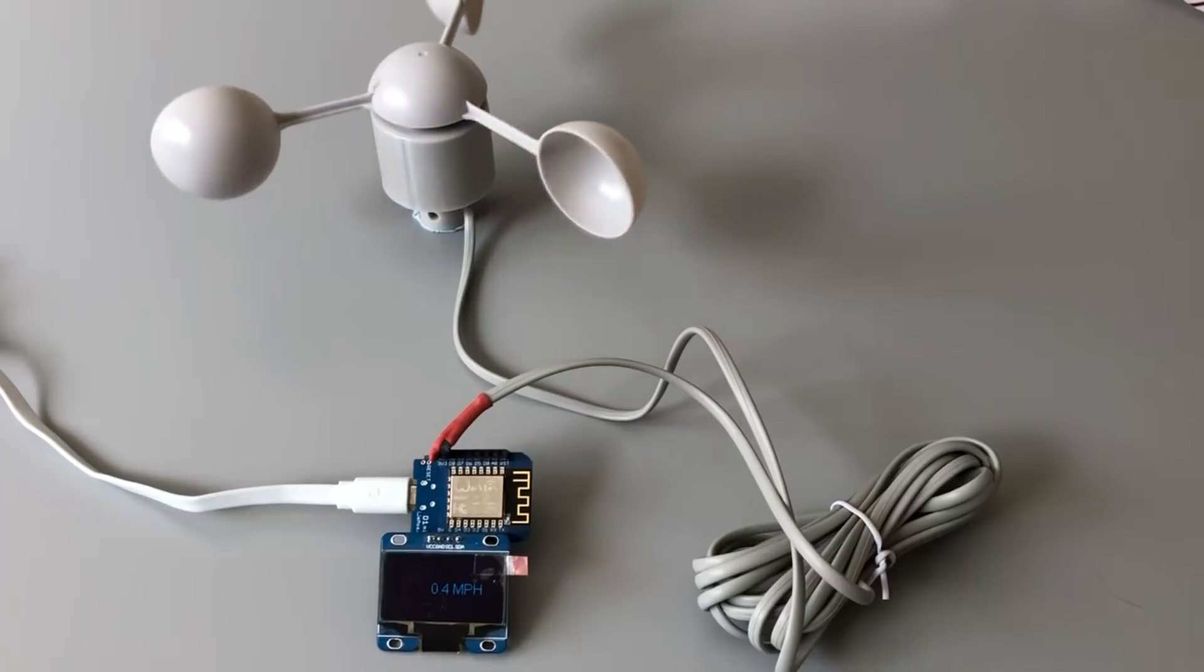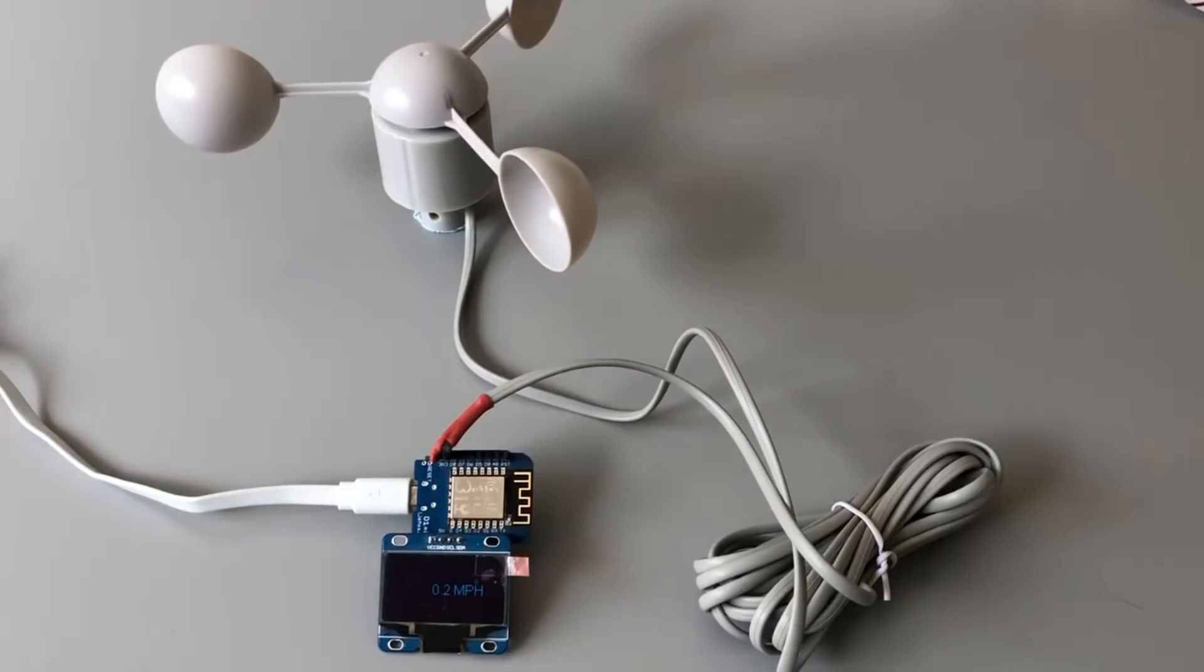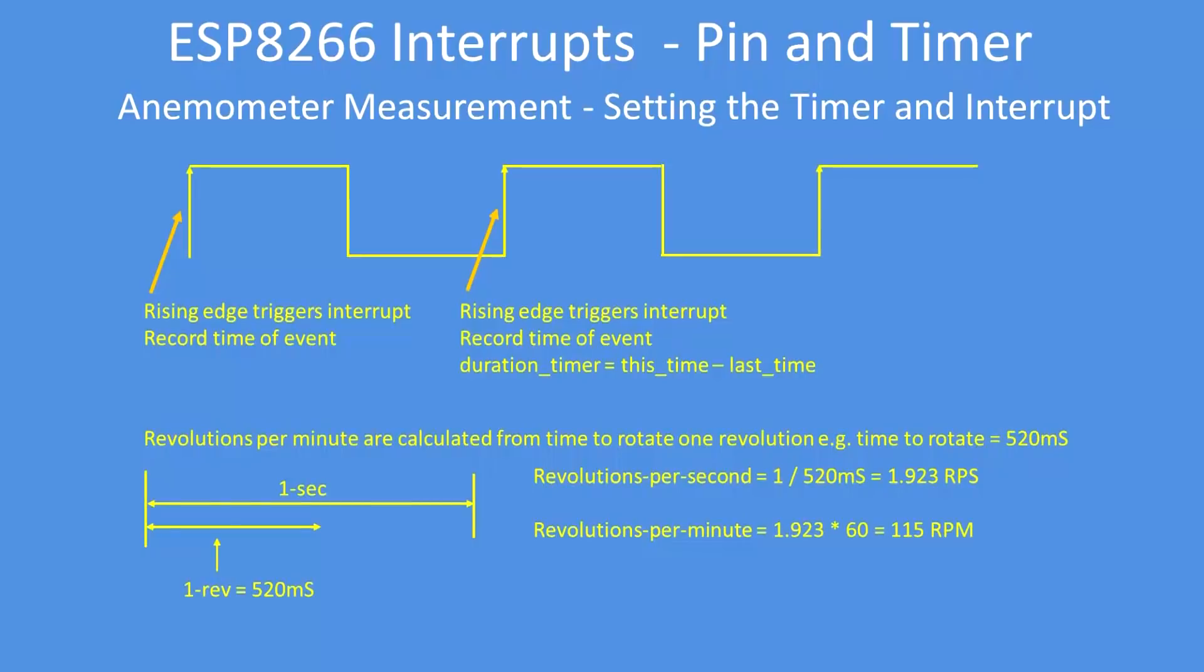But note how slow that can run at 0.42 miles per hour. It's a very, very accurate means of measuring wind speed. So that's how it actually operates: when the switch activates, the time is recorded on the first rising edge.